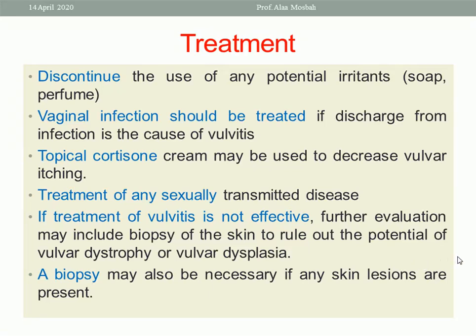Vaginal infection should be treated as it may be causing the vulvitis. For candida infection, give miconazole vaginal suppository 200mg every day for five days. For trichomonas vaginitis, give metronidazole oral 500mg twice daily for seven days, or metronidazole vaginal gel every day at bedtime for five to seven days. Manage the source of infection which is the vaginitis if that is the cause of vulvitis.